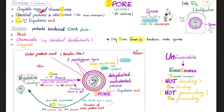That was the structure of the spore. Now the function: it protects the bacterial DNA from heat, chemicals, and enzymes. Clinically speaking, it helps doctors identify the bacteria — because when you find a spore in the lab, you can be certain it is some type of gram-positive, since only some gram-positives are capable of making spores.